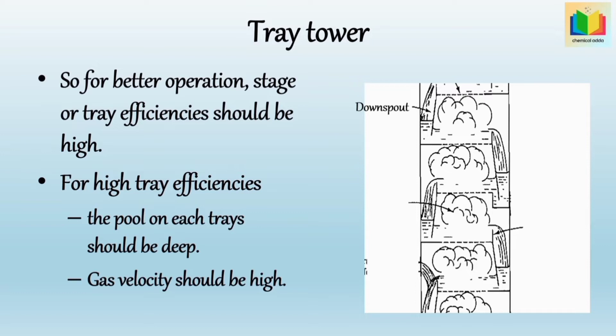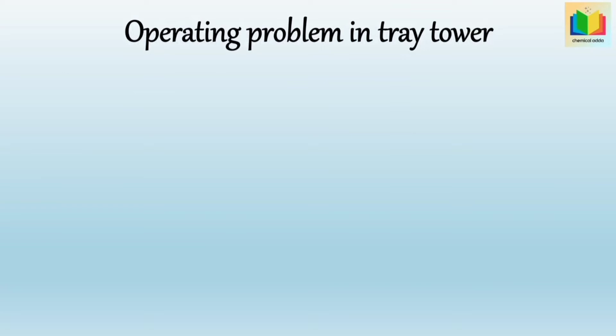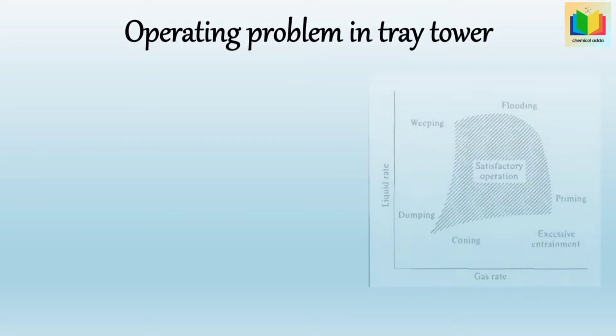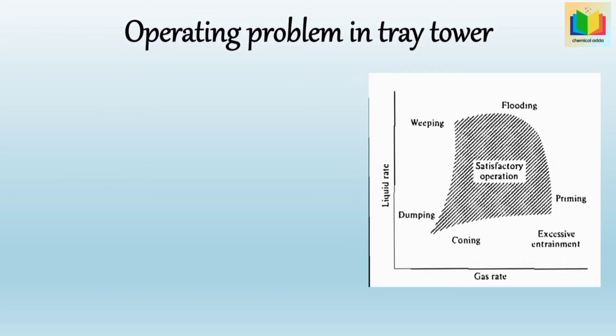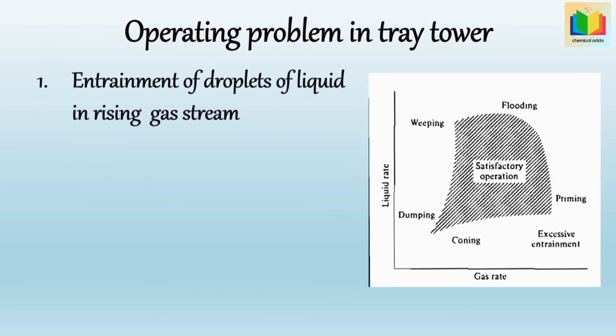But when the gas velocity is relatively high, it is dispersed very thoroughly into the liquid. However, these two conditions — deep liquid depth on the tray and high gas velocity — lead to several operating difficulties in the tray tower. Now let's see the operating problems. Changes in gas and liquid flow rate lead to several operating problems, as shown in the figure. The first operating problem is entrainment of droplets of liquid in the rising gas stream.